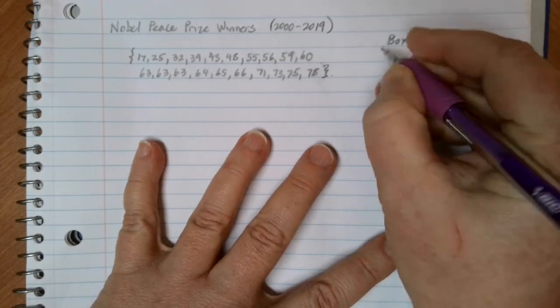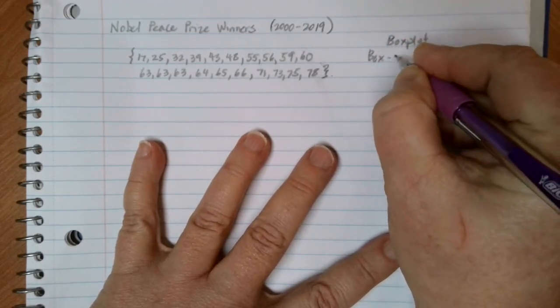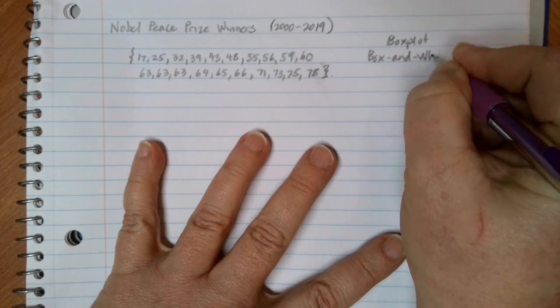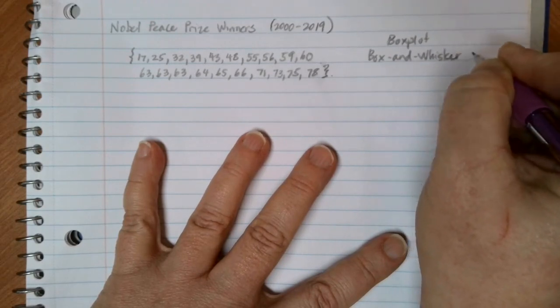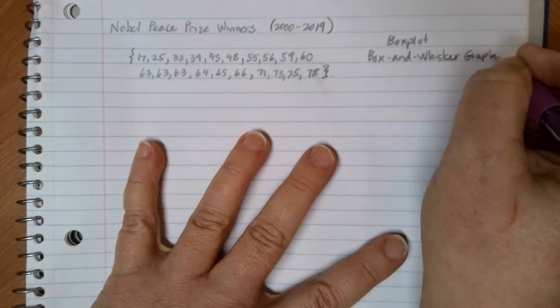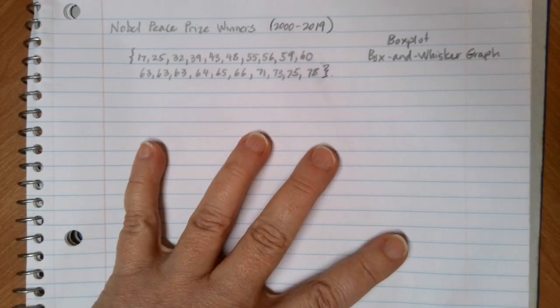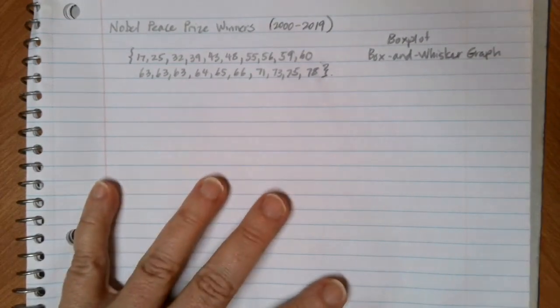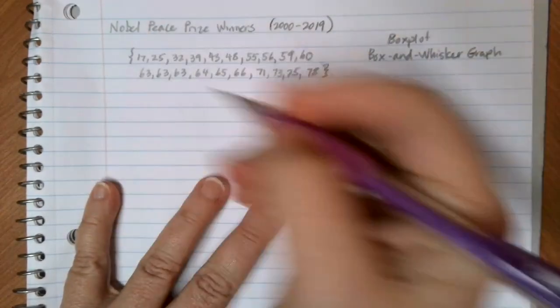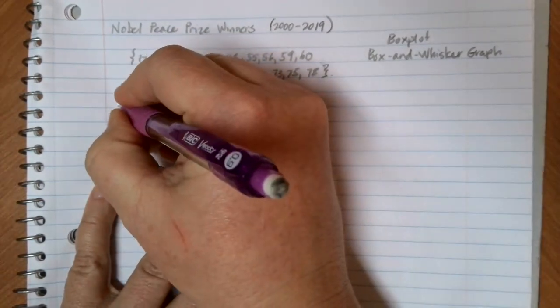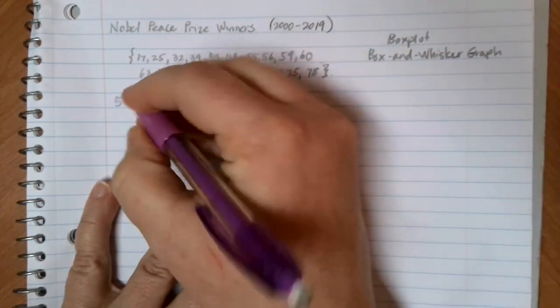Sometimes this is also referred to as a box and whisker graph. When you go to create a box plot or a box and whisker graph, it's based on just five numbers that summarize our data set.